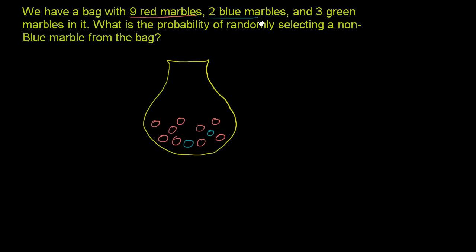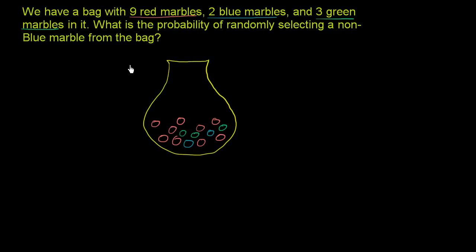And then we have three green marbles. Let me draw those three: one, two, three. What is the probability of randomly selecting a non-blue marble from the bag? So maybe we mix them all up, and we have an equal probability of selecting any one of these. The way you think about it is: what fraction of all of the possible events meet our constraints?